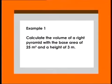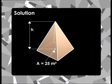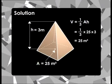Example 1: Calculate the volume of a right pyramid with a base area of 25 square meters and a height of 3 meters. Solution: Given A = 25 m², H = 3 m. V = (1/3)AH = (1/3) × 25 × 3 = 25 cubic meters.